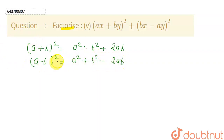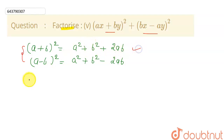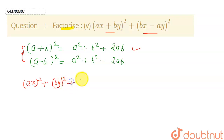So if we use these two identities and open these two expressions — if I open this (ax plus by) whole square using this identity, I will be getting ax squared plus by squared plus 2 into the first term, which is ax, and the second term, which is by.